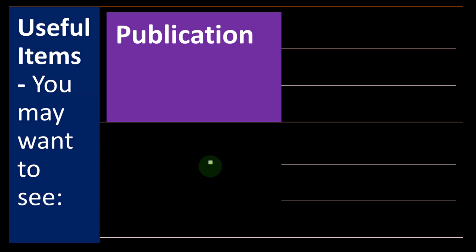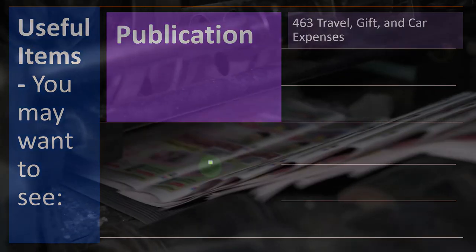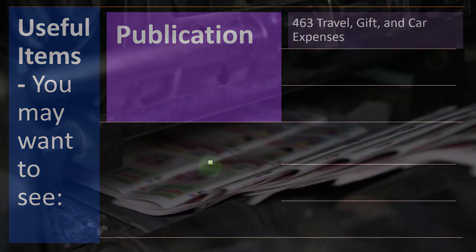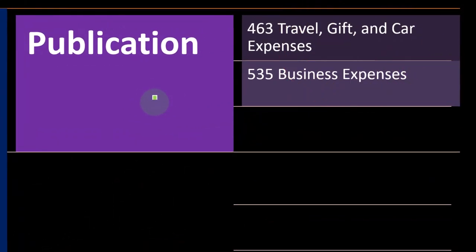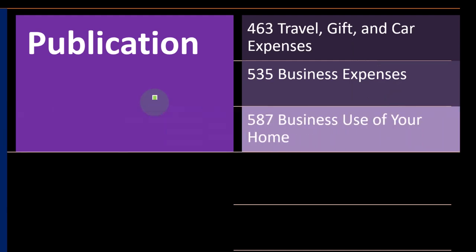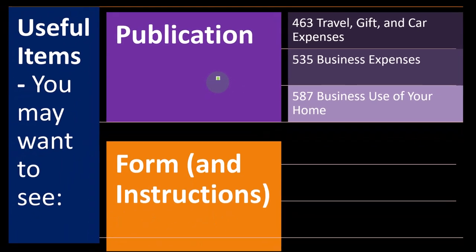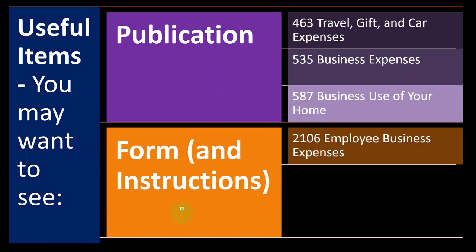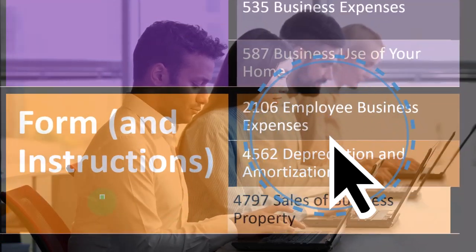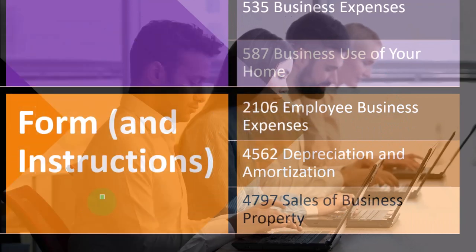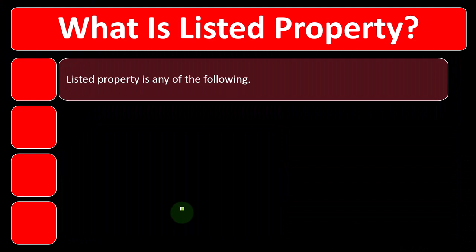Useful items you may want to see — other publications you could dive into for more information: Publication 463, travel, gift, and car expenses, which dovetails on this topic; Publication 535, business expenses; and Publication 587, business use of your home. Forms and instructions to look at: Form 2106, employee business expenses; Form 4562, depreciation and amortization; and Form 4797, sales of business property. You can check out those forms and their instructions for more research.